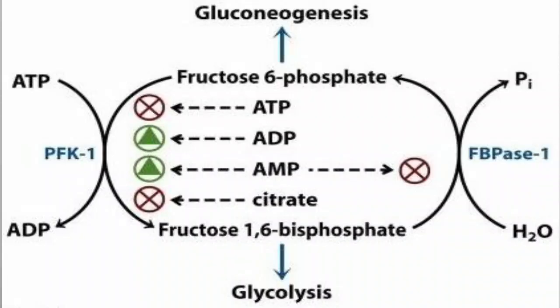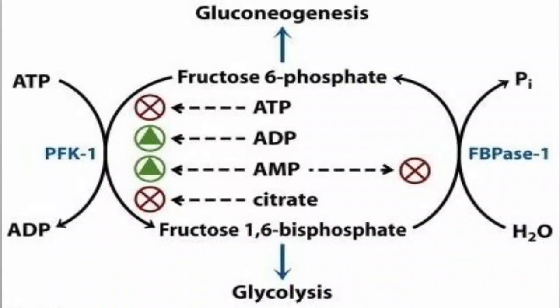The second positive modulator — most important in the liver — is fructose 2,6-bisphosphate, which I'll return to after explaining the inhibitors. The two allosteric inhibitors of PFK1 are: first, excess ATP, which has an allosteric inhibitory effect because if sufficient ATP is already present, there is no need to increase glycolysis. Therefore, ATP decreases the rate of glycolysis by negatively modulating PFK1.